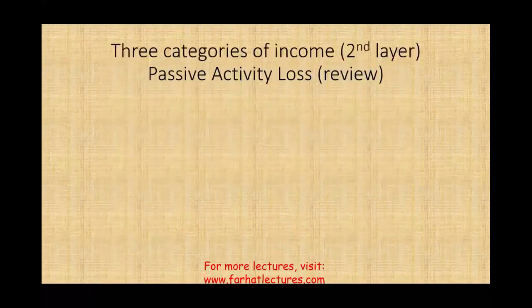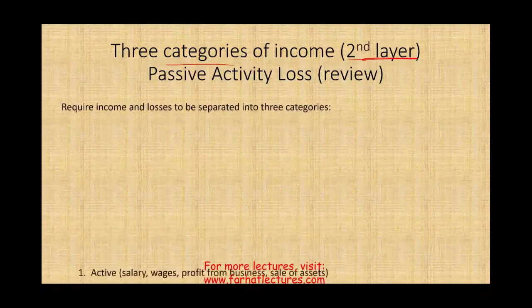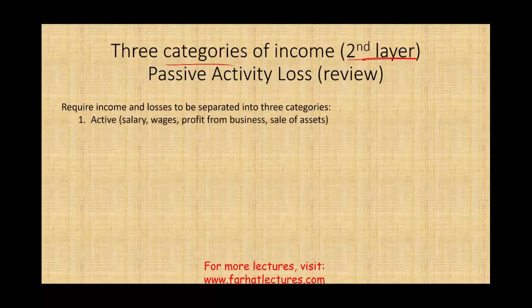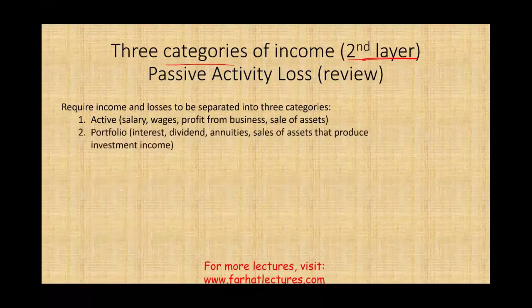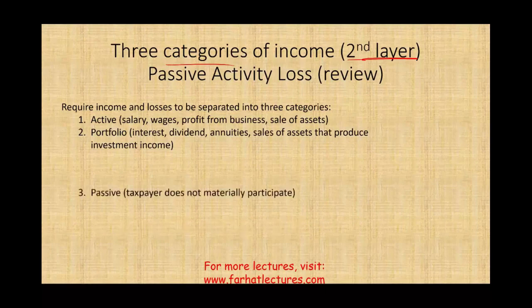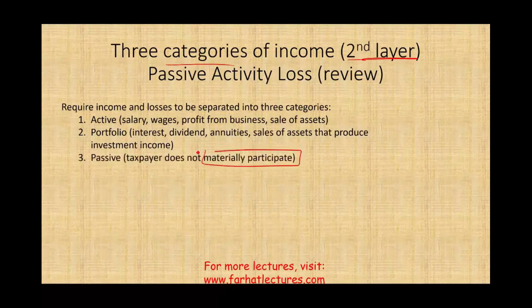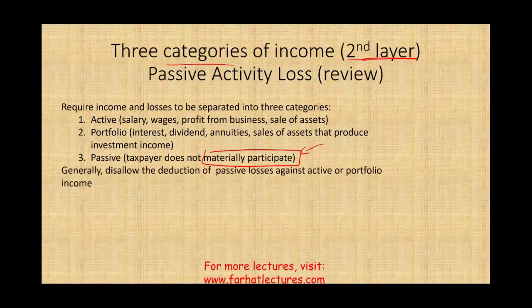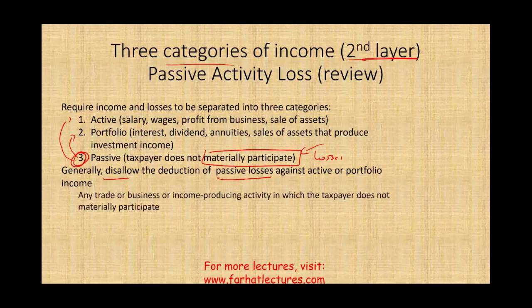The passive activity loss limit is basically a review. The second layer of defense that the IRS introduced is the three categories of income. Income can be active — salary, wages, profit from business, sale of assets from the business; portfolio income — interest, dividends, annuities, and sale of assets that produce those; and passive, where the taxpayer does not materially participate. The overall idea is that the IRS disallows the deduction of passive losses against portfolio or active income.